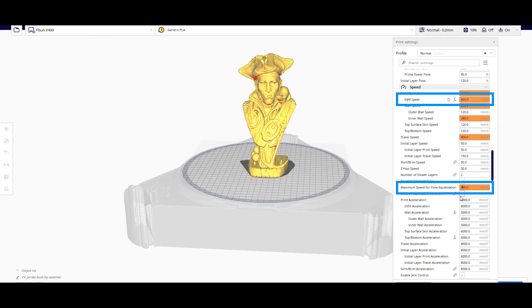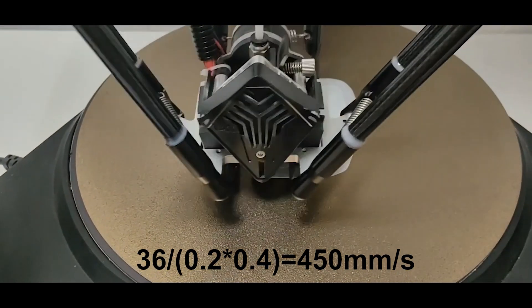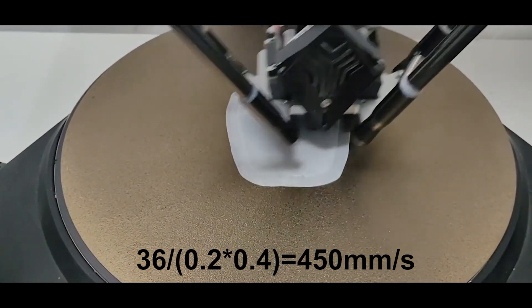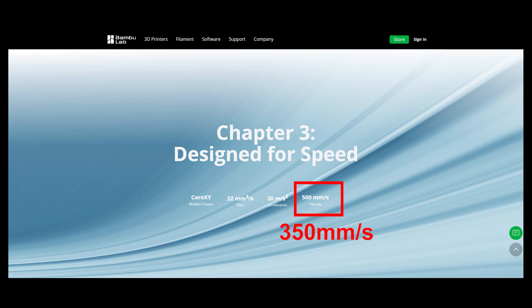Compared to the V400, which was able to print at 450 millimeters per second and the maximum volume speed was 36 millimeters to the third power per second. So the X1 is limited by the nozzle melting rate, which affects its printing speed, and the maximum print speed should be 350 millimeters per second.